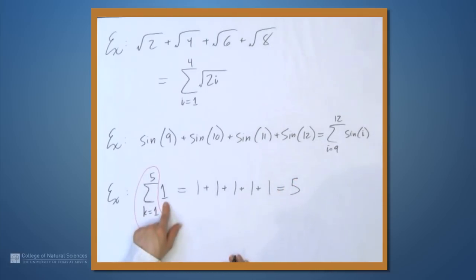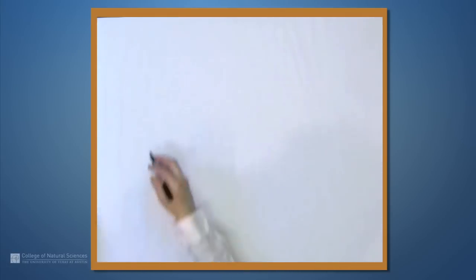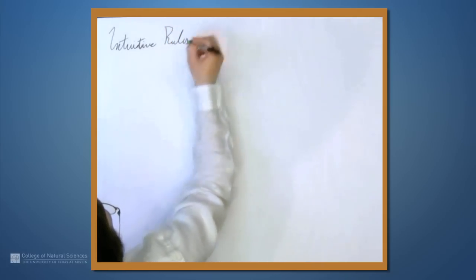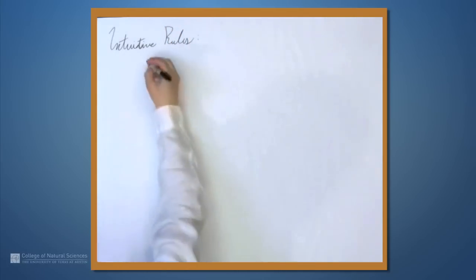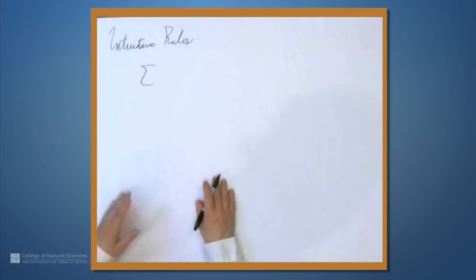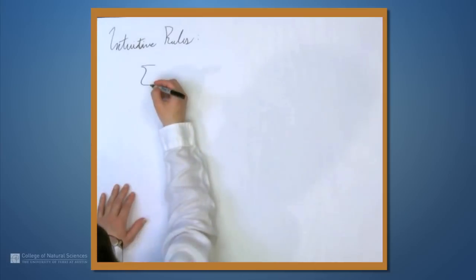So don't be worried if you see something like this that doesn't have a k in it or an i in it or whatever this variable is. Now, there's some nice intuitive rules for manipulating sums like this, and it's nice because they're even better than the similar limit rules because we don't have anything infinite going on.